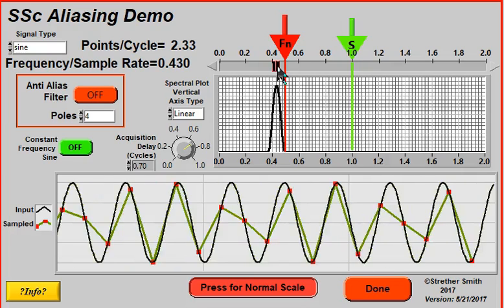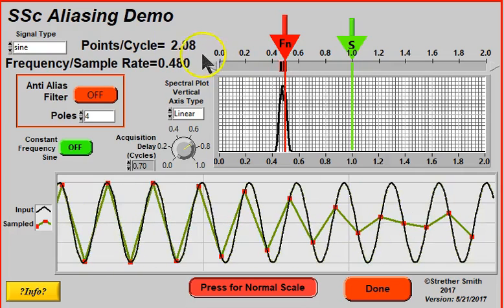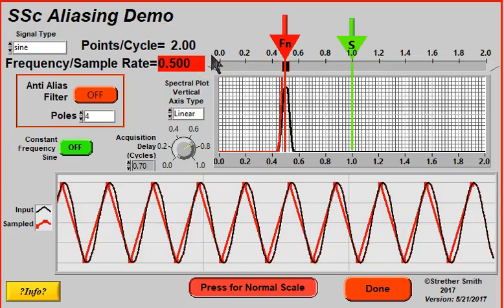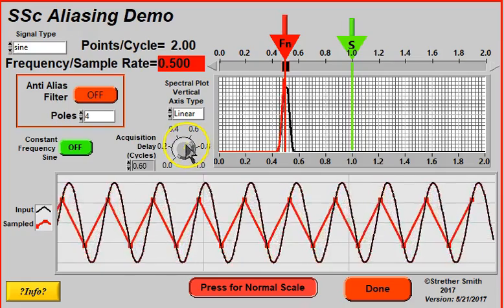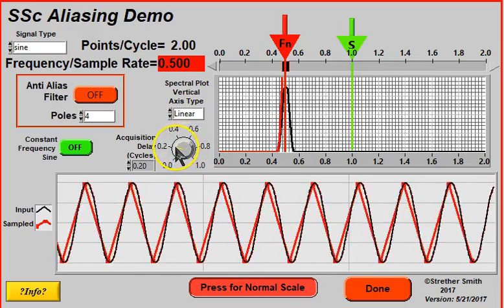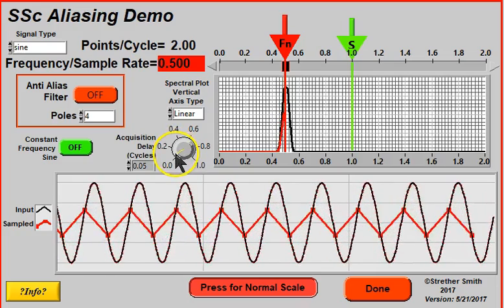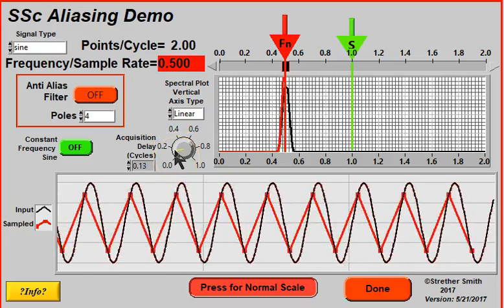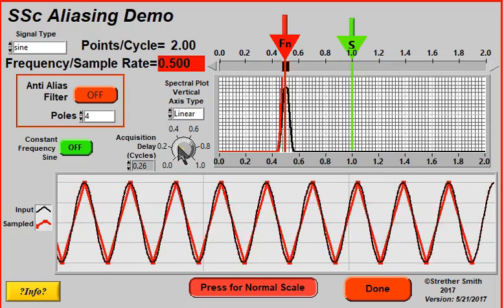So what I'm going to do now is land precisely on 2 points per cycle. And what it looks like now is that it looks like we've got a pretty well-defined signal here. But the problem here is that by changing when I acquire the data during the cycle, I can get any answer that I want ranging from zero to something like full scale. So at this point, we have violated Shannon's theorem. We don't have a good definition of what the signal is.